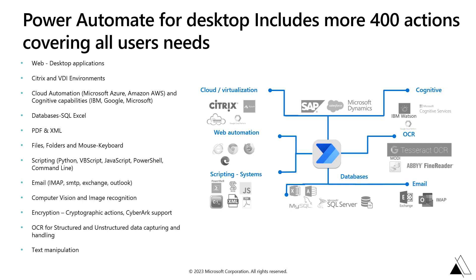Power Automate for desktop includes more than 400 actions covering all user needs, whether it includes working with desktop applications, web applications, databases, SQL, Excel, PDF, XML, emails, or any type of text manipulation.